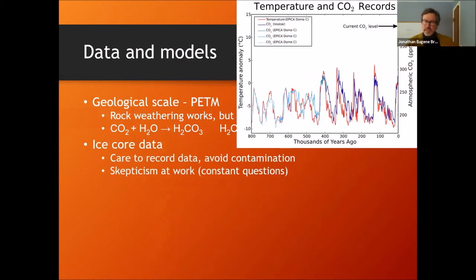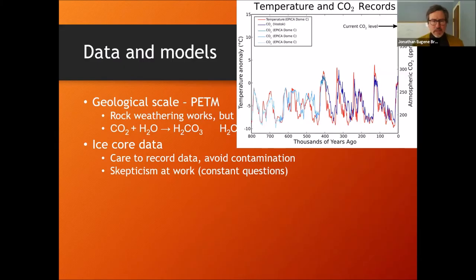The ice core data, again, only going back in this case 800,000 years, a small slice even of that tens of millions of years that we were looking at before. The ice core data is excellent for giving us past CO2 levels. Remember, with ice cores, we are actually sampling little bubbles of air that are caught inside these glaciers, and so in a way give us a direct measurement of what ancient air was like.